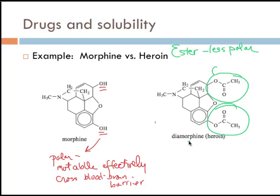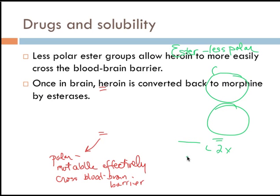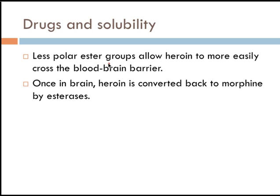Diamorphine, also known as heroin, is about twice as effective as morphine. It's twice as effective in the intended effect, but it also amplifies side effects such as tolerance and dependency. Those less polar ester groups on heroin allow it to more easily cross the blood-brain barrier. Once in the brain, heroin is converted back to morphine by esterases — so the action in the brain is the same as morphine. It's simply that more of the drug gets into the brain faster. That ends the screencast on drug action.